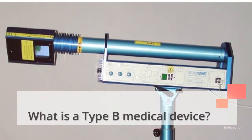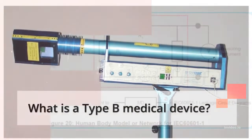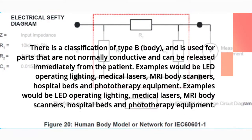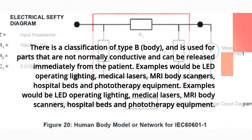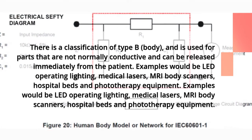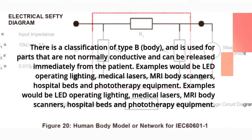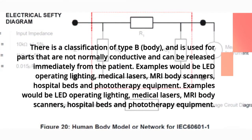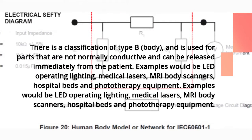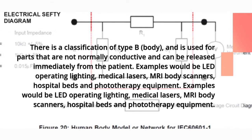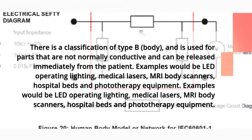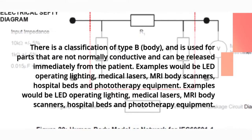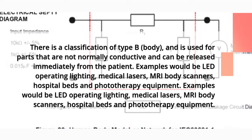What is a Type B Medical Device? Type B (Body) is a classification used for parts that are not normally conductive and can be released immediately from the patient. Examples include LED operating lighting, medical lasers, MRI body scanners, hospital beds, and phototherapy equipment.